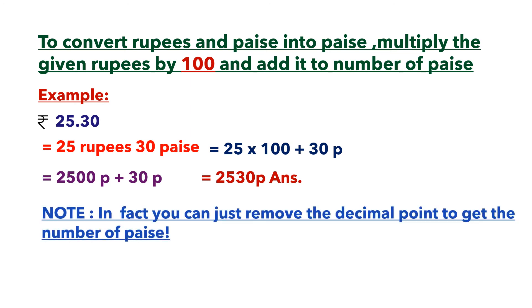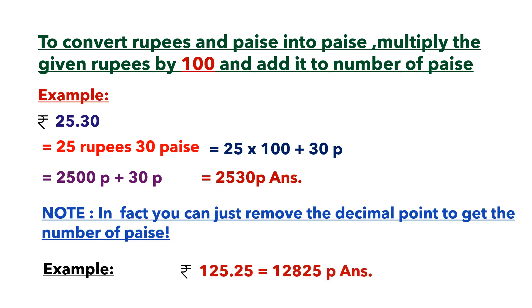Note: In fact, you can just remove the decimal point to get the number of paise. For example, 125.25 rupees — simply remove the decimal point and you get 12525 paise as your answer.